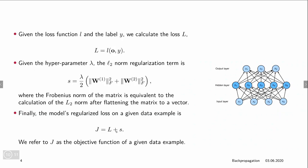Now we're almost done with our forward pass. The last thing we have to do is compute our final objective function J, which is given by the sum of L and S — the loss and our shrinkage. The objective is also called the regularized loss. This forward pass can very well be visualized using a computational graph.